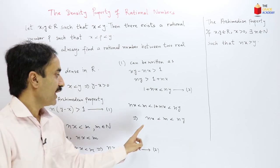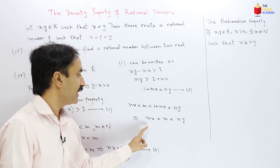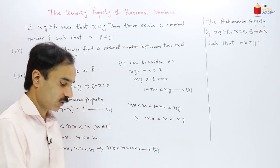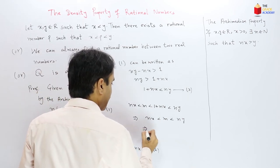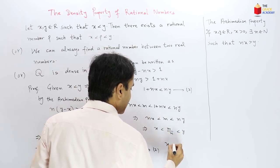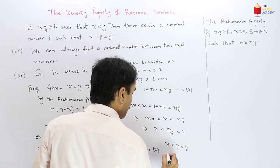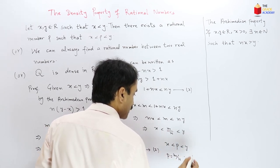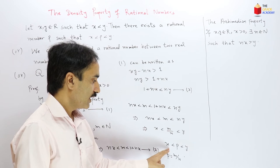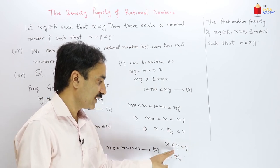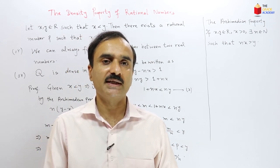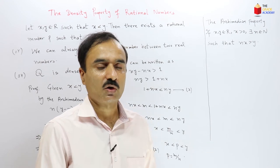Since n is a positive integer, we can divide through the inequality by n without changing its order. Dividing by n gives x is less than m over n is less than y. Setting p equal to m over n, which is a rational number, we have x is less than p is less than y, which proves the density property that between any two real numbers x and y there exists a rational number p.